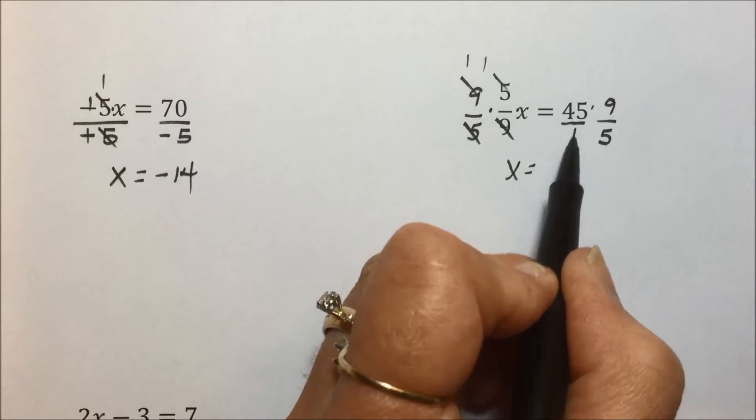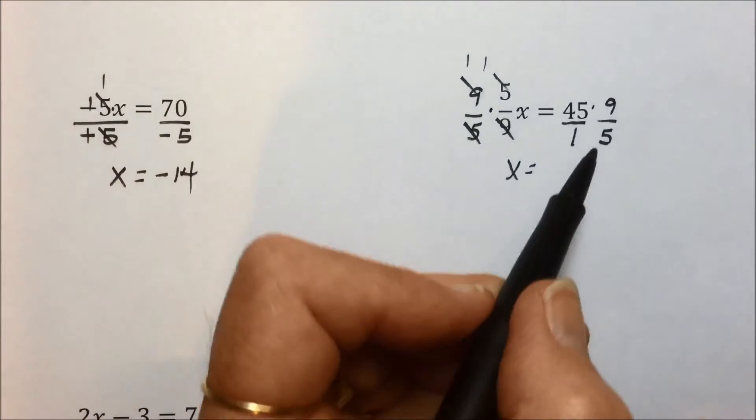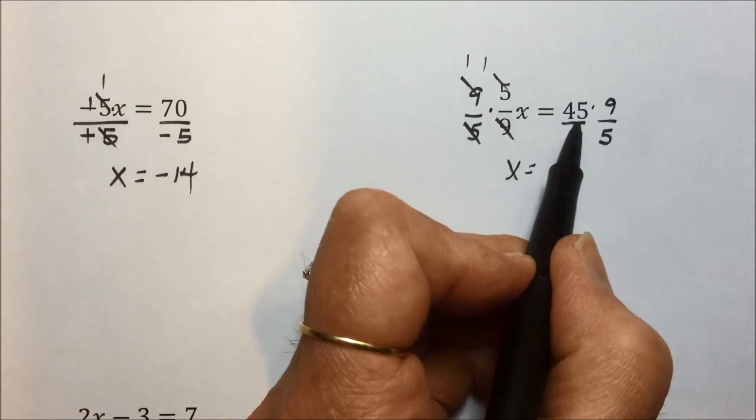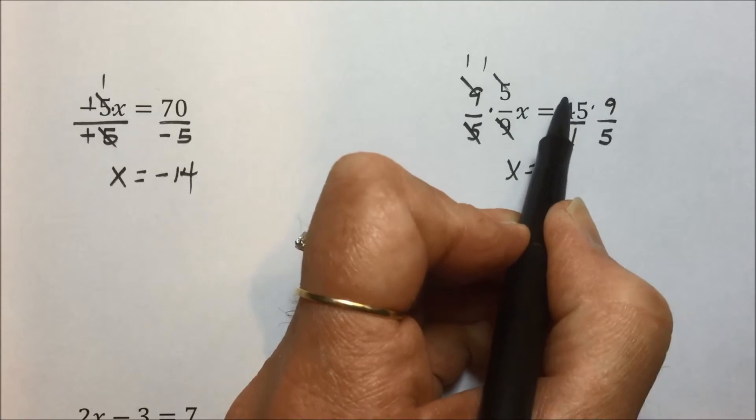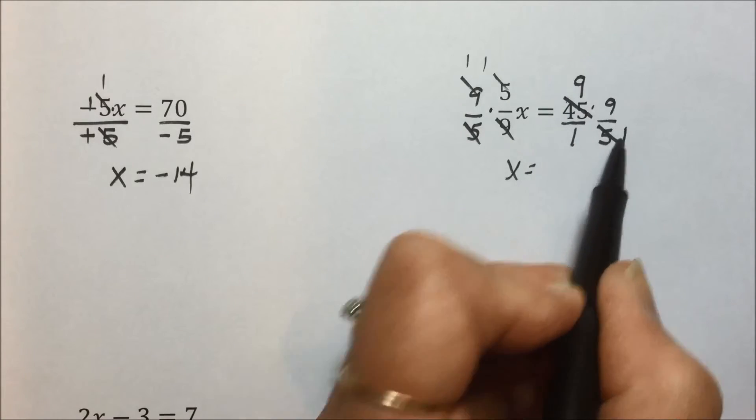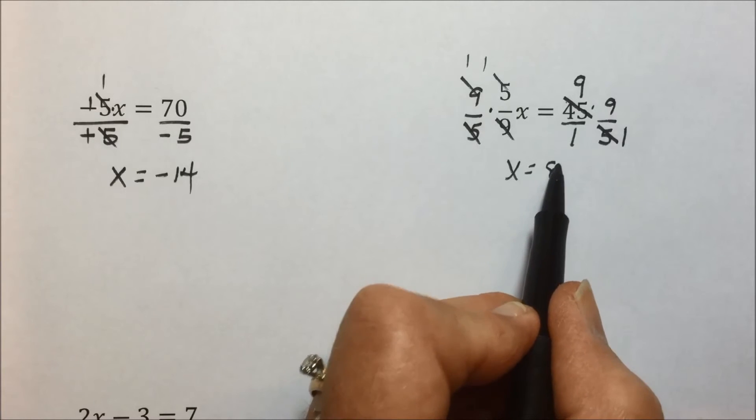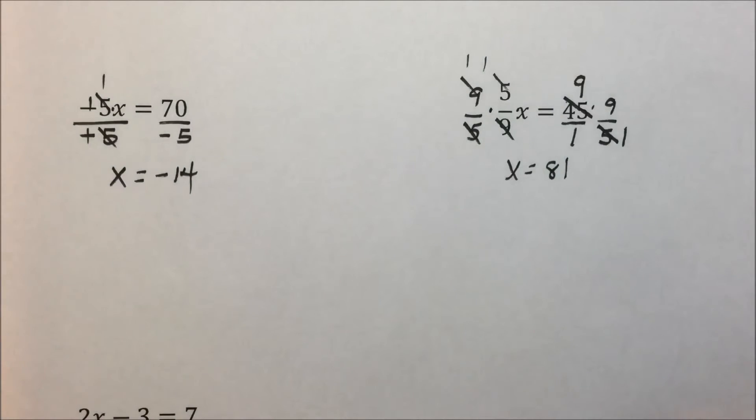The 45 has a denominator of 1, and instead of taking 45 times 9 and then dividing by 5, instead factoring out a common 5, 45 divided by 5 is 9, 5 divided by 5 is 1, leaving in the numerator 9 times 9 is 81 over 1, or just 81.